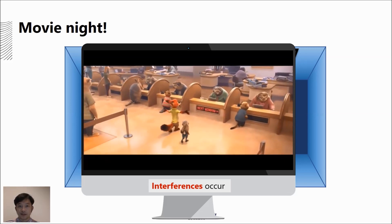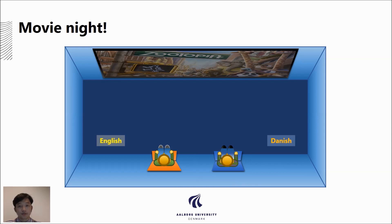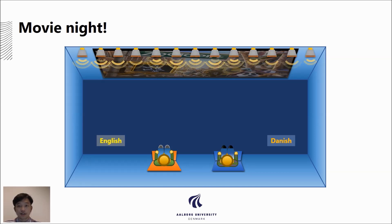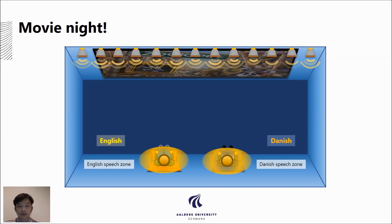Yes, we have interferences here. So what sound zone control is doing is using a number of loudspeakers to create multiple listening zones at the same time. In this example, it creates an English speech zone and a Danish speech zone simultaneously.